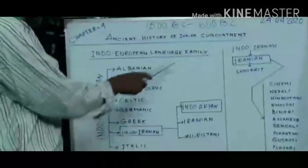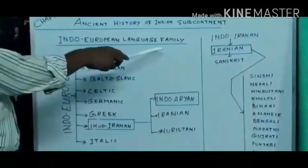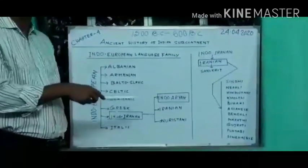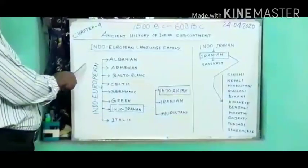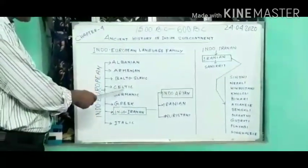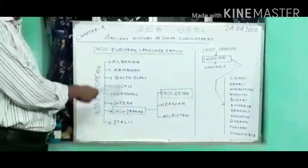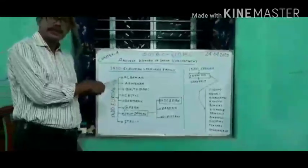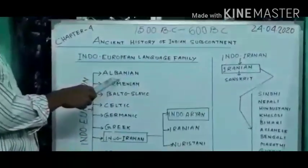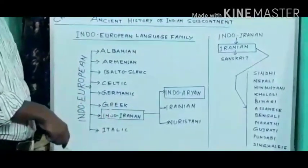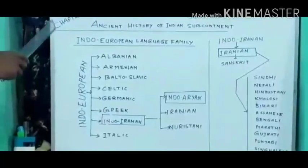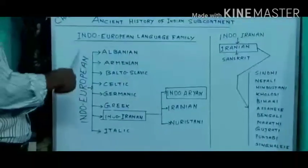Follow the board. This is the Indo-European language family. This language group has been divided into eight divisions. These languages have been introduced from this language group: first is Albanian, second is Armenian, then Balto-Slavic, number four Celtic, Germanic, Greek, Hindu, Iranian, and Italian. These eight language groups have been introduced from, or originated from, this Indo-European language.